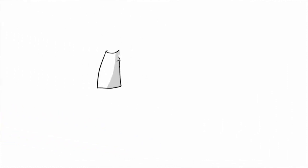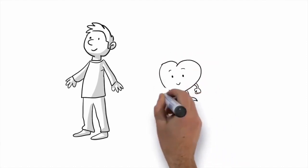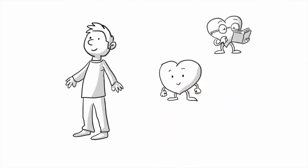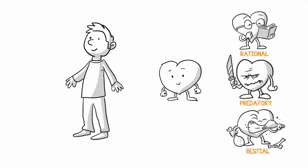Just as the body has distinct organs and parts, the soul has distinct attributes: the rational, predatory, and bestial attributes. Beautiful character occurs when the soul's attributes are balanced.